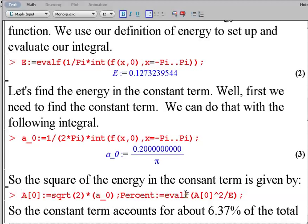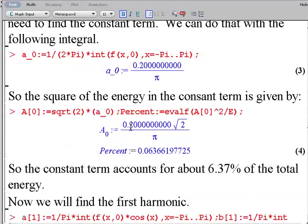And then the percent will be the square of that, because it's the amplitude divided by the energy. So capital A_0 gives us the amplitude. The percent is going to give us the amount of energy accounted for in the constant term.